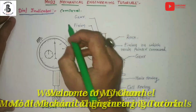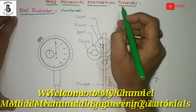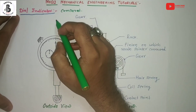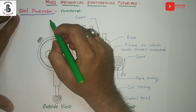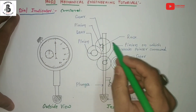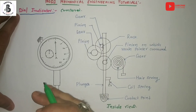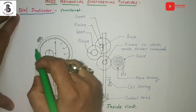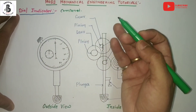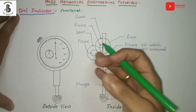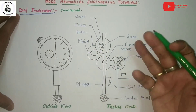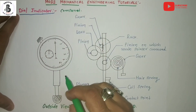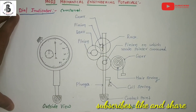Welcome to Modi Mechanical Engineering Tutorials. Today I would like to explain about the instrument called a dial indicator — its construction, working, and how it is used for measurement. This indicator is used for comparative measurement with different lengths, different heights, or different aspects. Basic theory about comparative measurement and comparators is covered in my previous lectures.